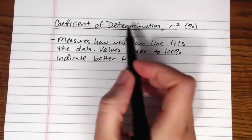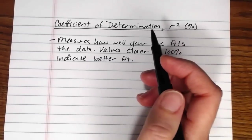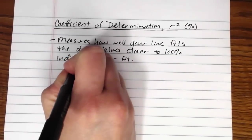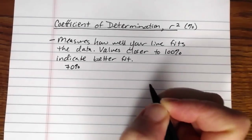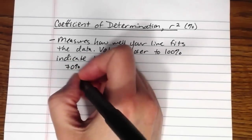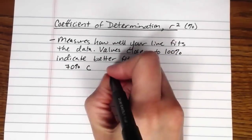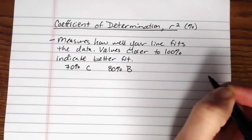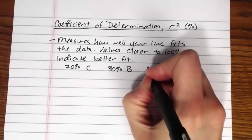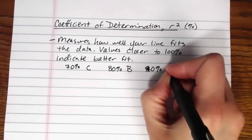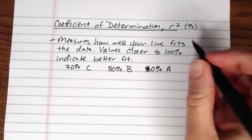The way that I like to think of the coefficient of determination is I tend to think of it as a letter grade. So if we get a 70% to a 79% fit, that's a C minus to a C plus. And that's a pretty good fit. That's about average. If we get something in the 80% to 89%, that's a B minus to a B plus.